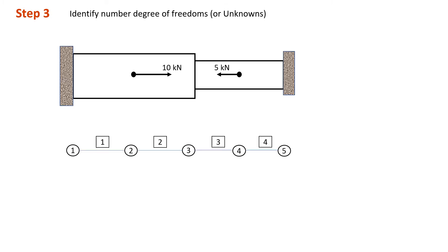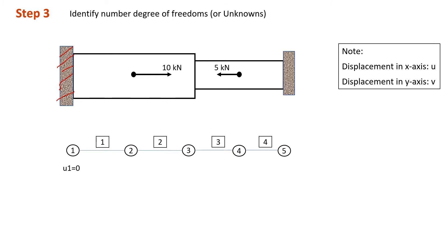Step 3 is to identify the number of degrees of freedom, or the unknowns in our system. At node 1 we have a fixed joint, meaning node 1 cannot move — it is held by the support. So u1 is equal to 0. Note that we always use u for displacement in the x direction and v for displacement in the y direction. Since node 1 is fixed, u1 = 0, and we will have a reaction force, so F1 equals the reaction force.